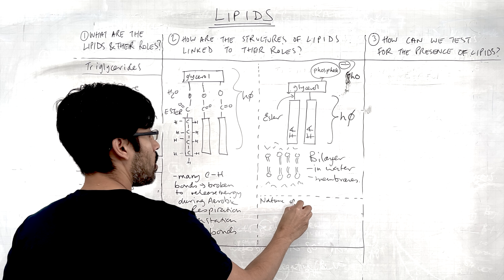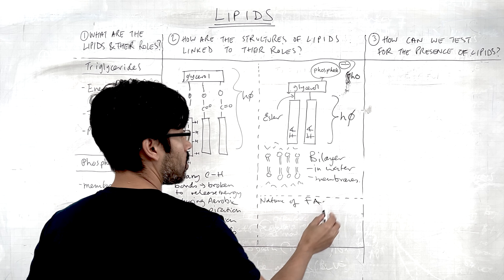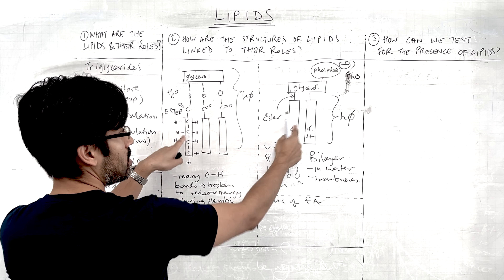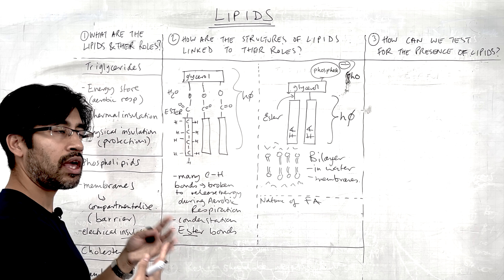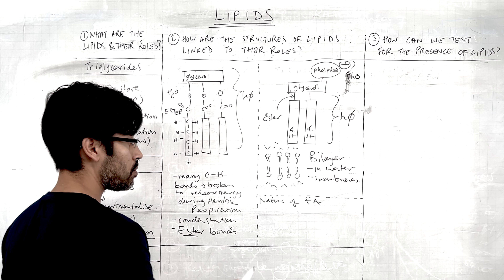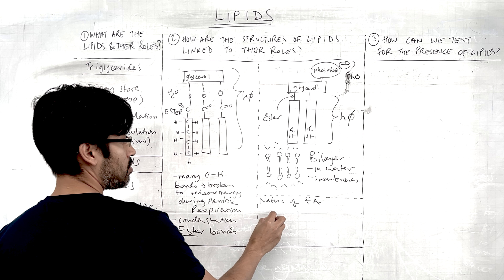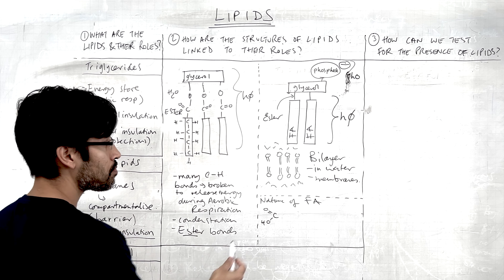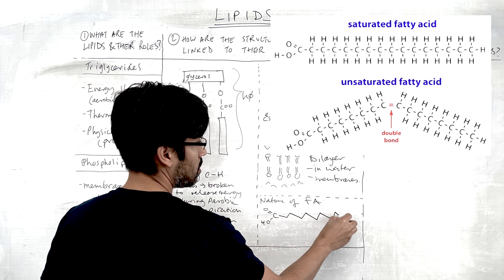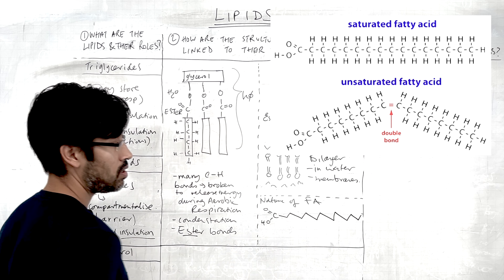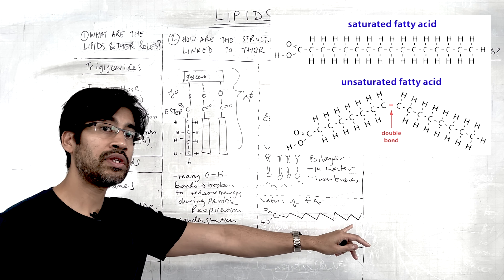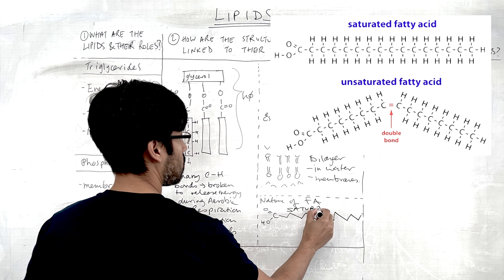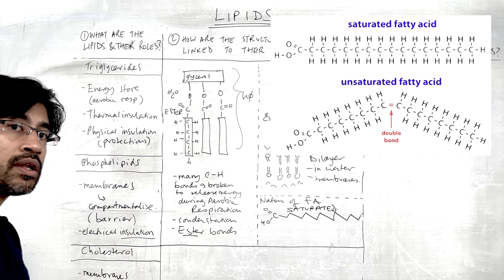This condensation reaction happens on the other OH groups too. What we end up with is three fatty acids connected to glycerol — that is the structure of our triglyceride. In that process we make three water molecules and get three fatty acids joined to the glycerol. Its job, essentially, is to store chemical energy.